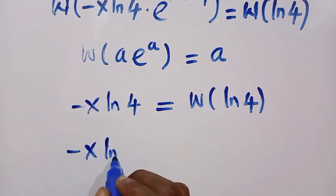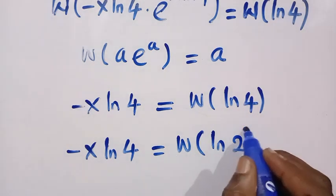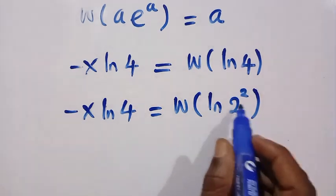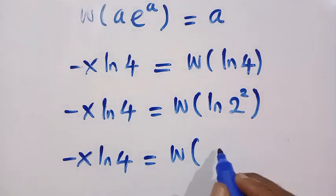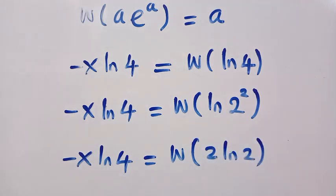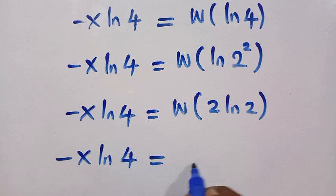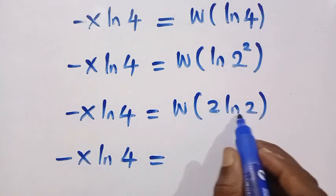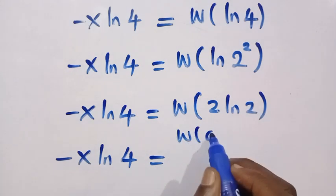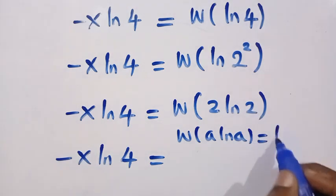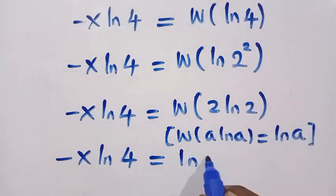We can write ln 4 as ln(2²) = 2·ln 2. Applying the identity W(a·ln a) = ln(ln a), with a = 2, we get W(2·ln 2) = ln(ln 2) = ln 2. Therefore minus x·ln 4 equals ln 2. Writing ln 4 as 2·ln 2, this becomes minus x times 2·ln 2 equals ln 2.